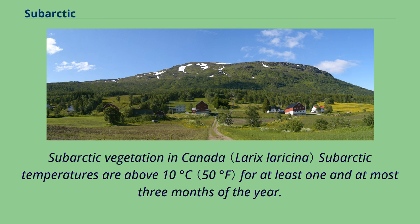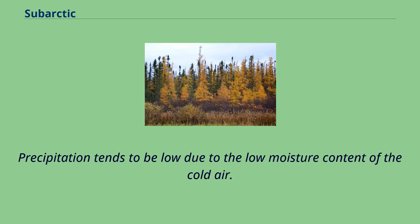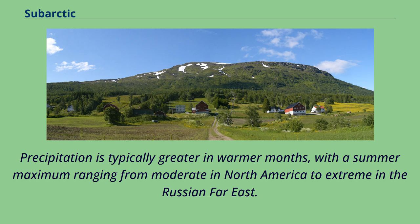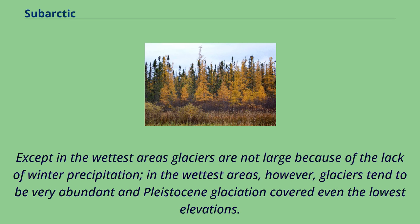In Canada's subarctic, temperatures are above 10 degrees Celsius for at least one and at most three months of the year. Precipitation tends to be low due to the low moisture content of the cold air, and is typically greater in warmer months, with a summer maximum ranging from moderate in North America to extreme in the Russian Far East. Except in the wettest areas, glaciers are not large because of the lack of winter precipitation; however, in the wettest areas, glaciers tend to be very abundant and Pleistocene glaciation covered even the lowest elevations.